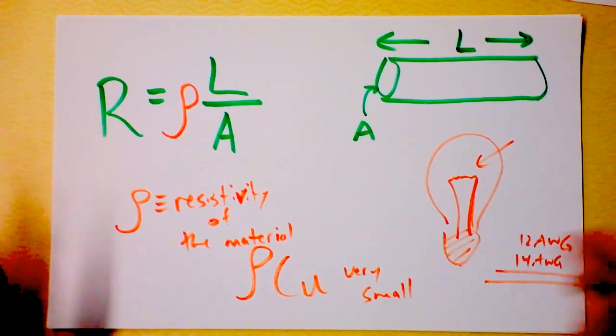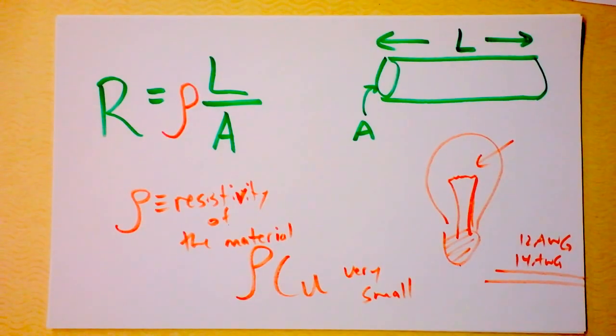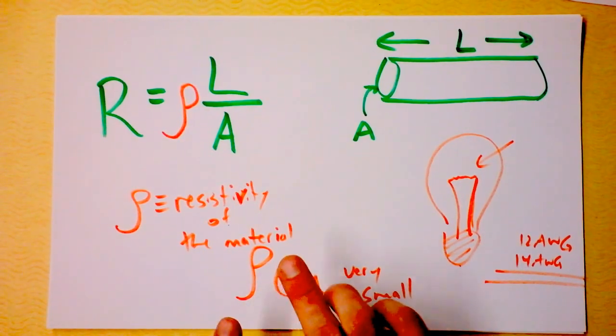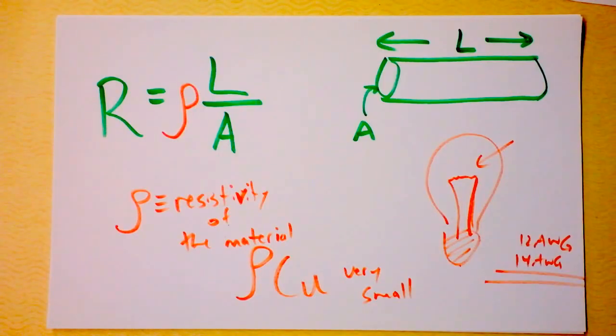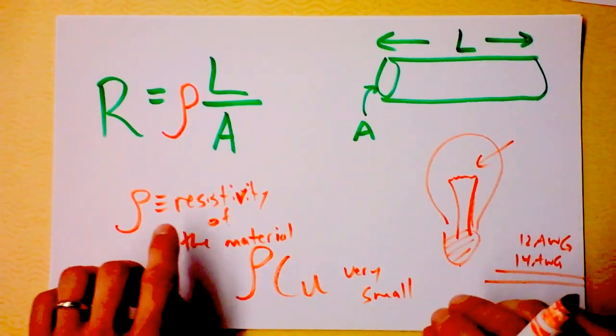In fact silver is sometimes used in really really demanding industrial applications for very low resistance. Can you tell me why silver wouldn't be used in a larger scale? It's really expensive. You know what's even cheaper than copper?